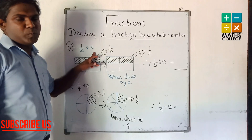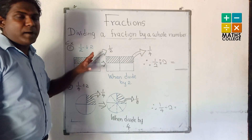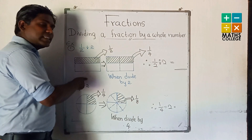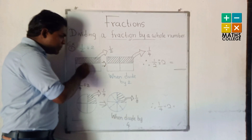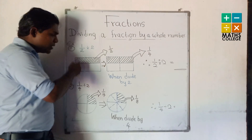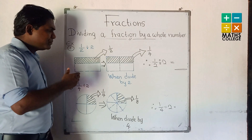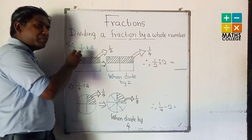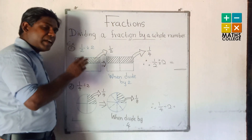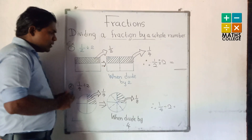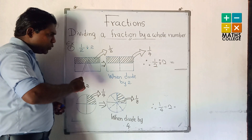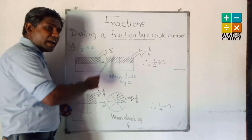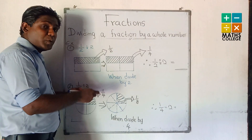First example: half divided by 2. How to present this to you with a rectangle. This rectangle is divided into 2 equal parts, and one part is shaded. Now, this shaded part — we have to divide it by 2. We have to divide by 2. When we divide by 2, what happens? This whole figure is divided into how many parts?